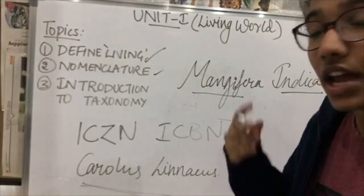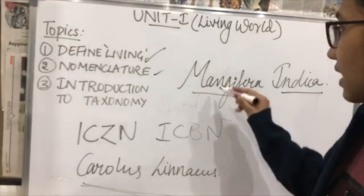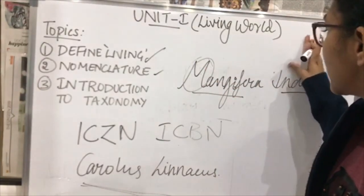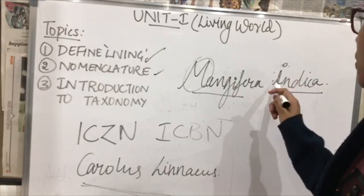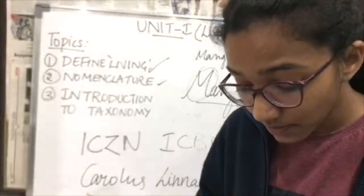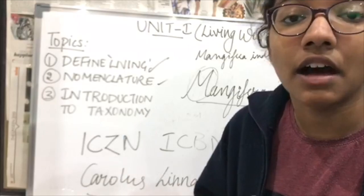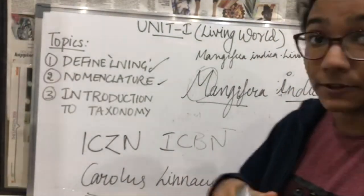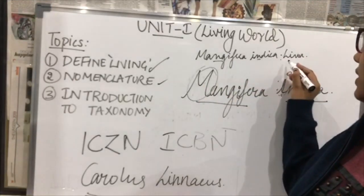The fourth one is that the generic name should start with a capital letter, but the specific name should always start with a small letter. Sometimes the name of the author or the scientist also appears after the name of the species, like for example Linnaeus. So Mangifera indica dot Lin, it can also be written that way.